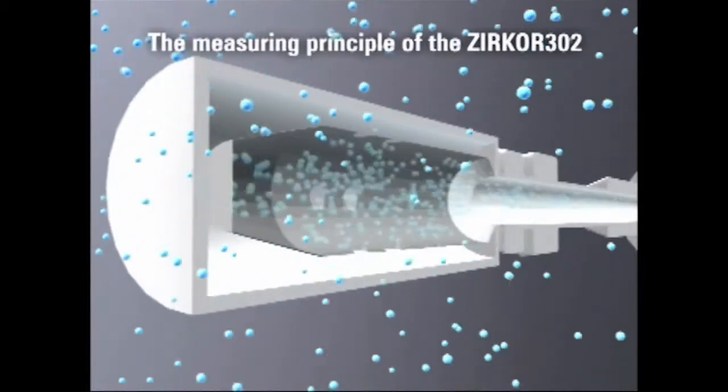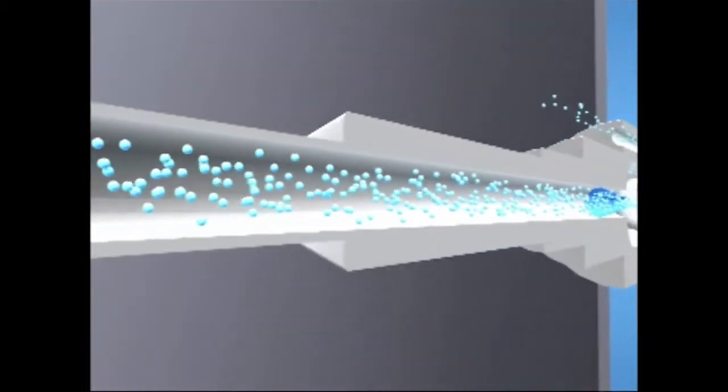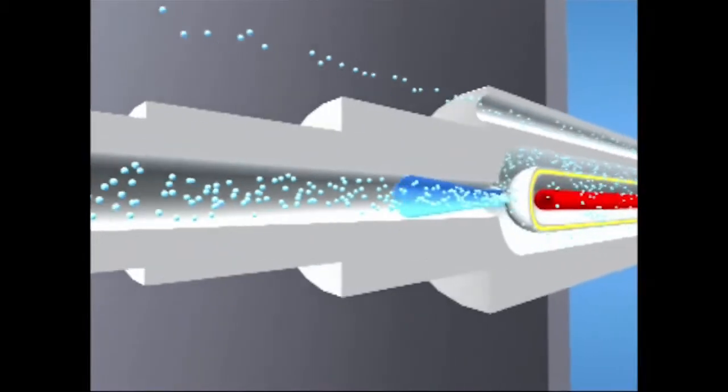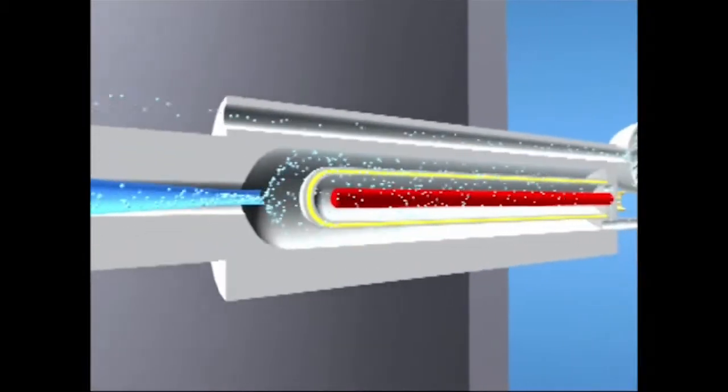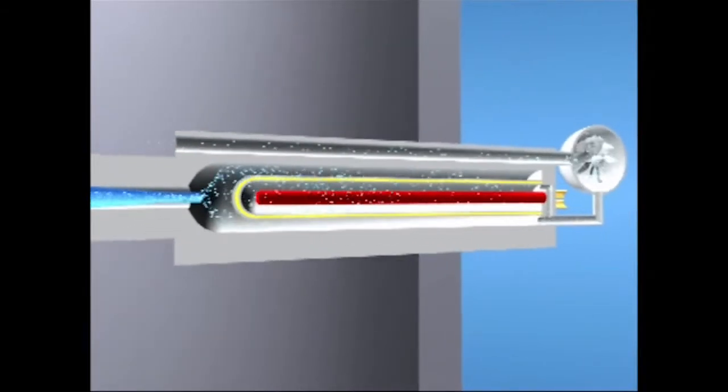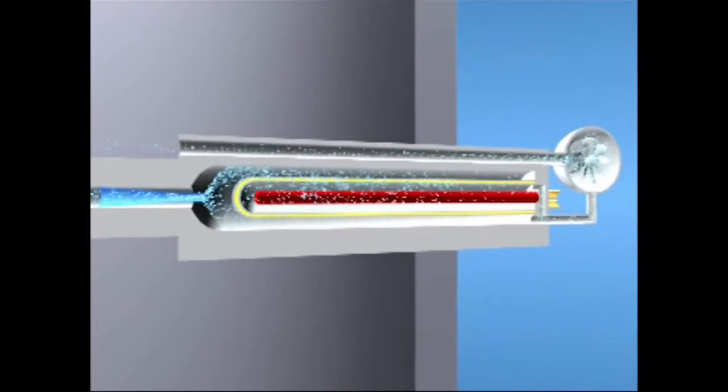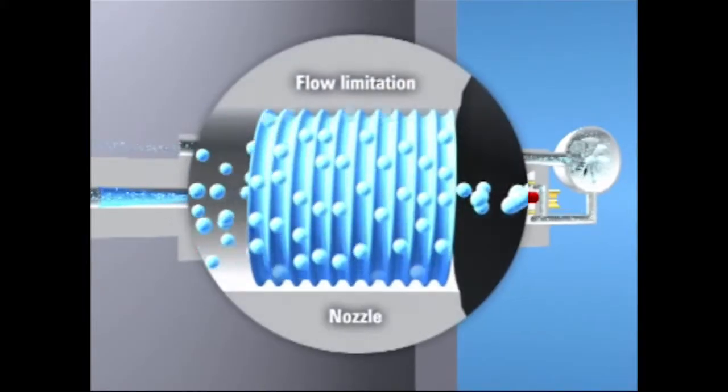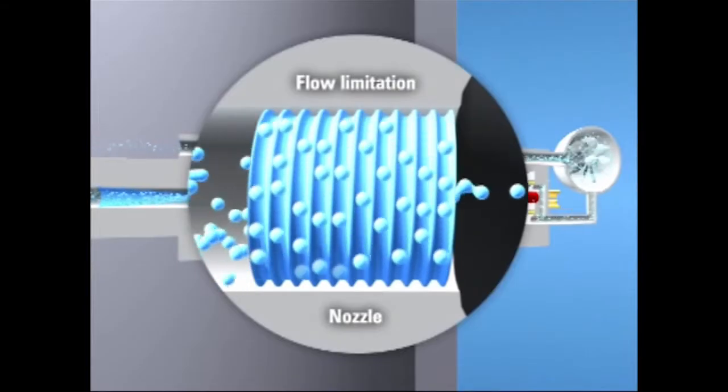The measuring principle behind the Circor 302 will now be explained. A pump controlled by differential pressure extracts the measuring gas and conveys it to the measurement cell. The flow rate is defined by a throttle inside the measuring gas extraction system.